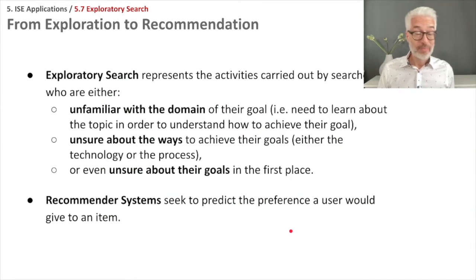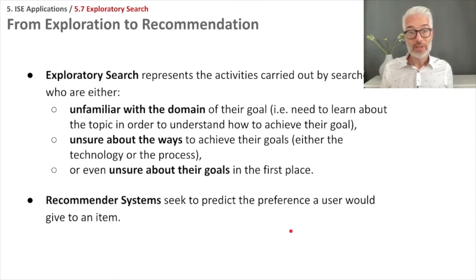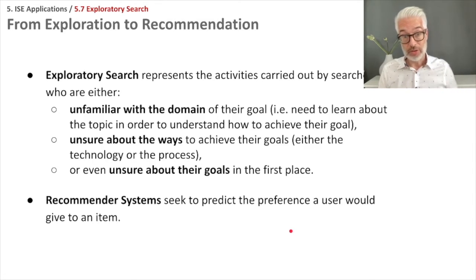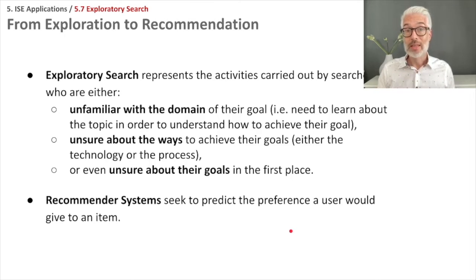You might notice that exploration is rather similar to recommendation. However, the goal is different. In exploratory search, activities are carried out by searchers who are either unfamiliar with the domain, unsure about the ways to achieve their goals, or unsure about their goals in the first place. Recommender systems seek to predict user preference for an item. Exploratory search is broader — it also recommends, but it's an ongoing process that opens up a complete new direction and guides you through the search space. It is a generalization of a recommender system.